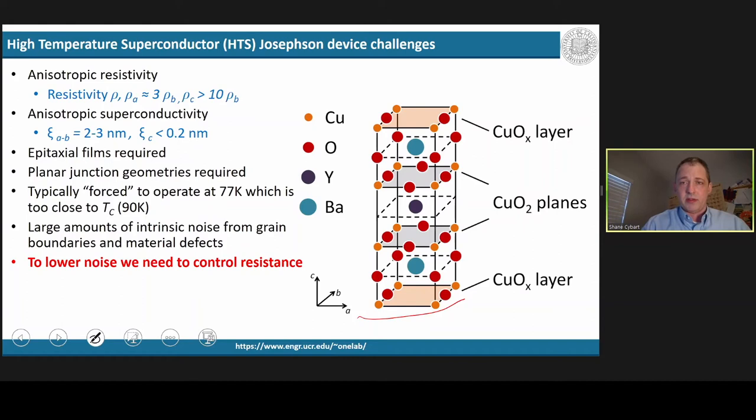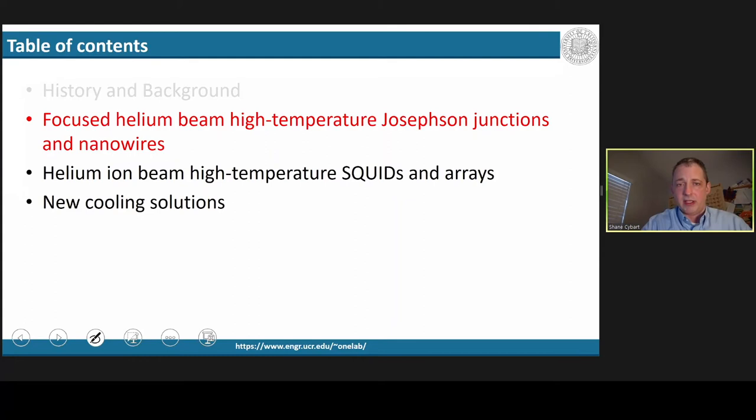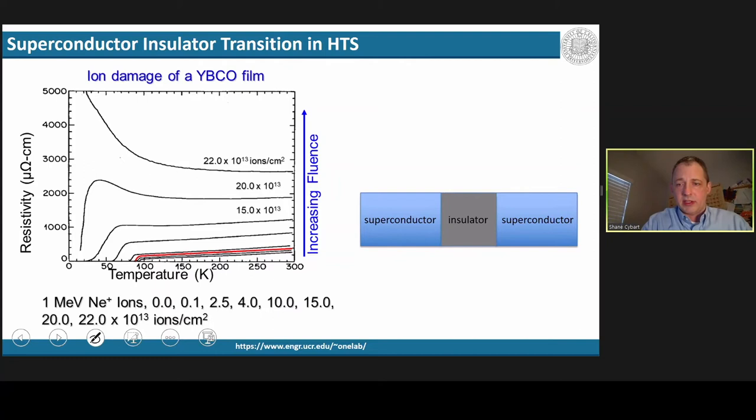Now I'm going to switch gears and talk about what my group is doing differently with high-temperature superconductors and nanowires. We use a different approach to make high-TC junctions than other people, and we use something called the superconductor insulator transition, which is an intrinsic property that's unique to high-temperature superconducting ceramics. This plot shows the resistivity as a function of temperature for a YBCO sample that was irradiated with different doses of ions. At the bottom, you see the unirradiated film, which is the low-resistive high-temperature superconductor with a 90 Kelvin TC.